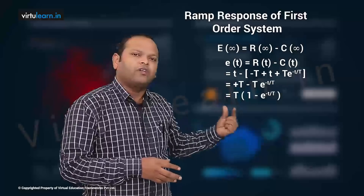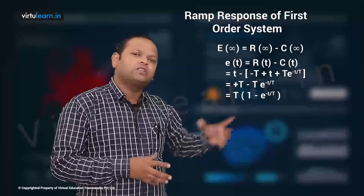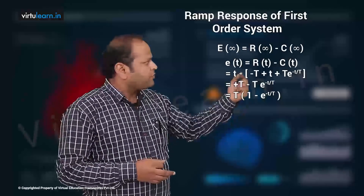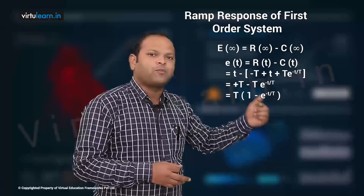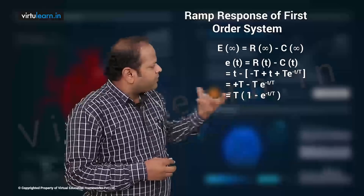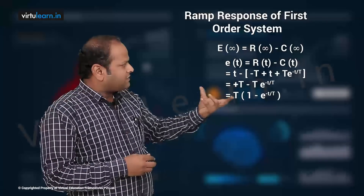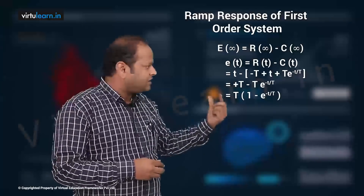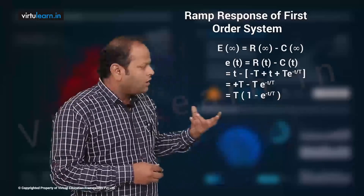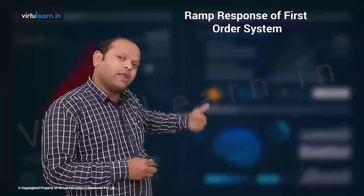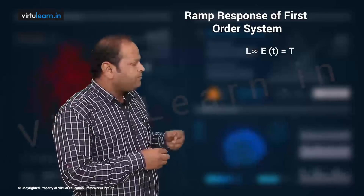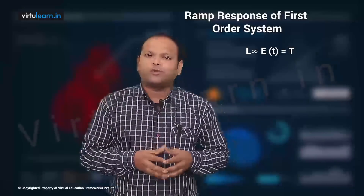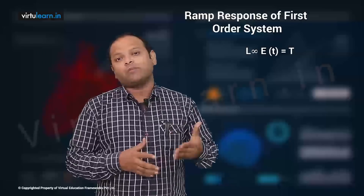So e(t) = r(t) − c(t). With r(t) = t and c(t) = T − t + T·e^(−t/T), the small t terms cancel, giving e(t) = T + T·e^(−t/T). Applying the limit as t → ∞, we get the steady state error as T alone — the time constant of the system.